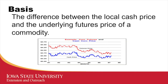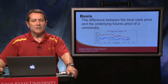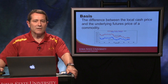The difference between the local cash price — the blue line in this graphic — and the underlying futures price of a commodity, the red line. Notice that the difference between the two we define as basis. The basis is typically wider at harvest than it is as we get further into the marketing year. The other important component to recognize is that basis tends to be a negative number, as cash prices in most of the Corn Belt is less than the futures price.